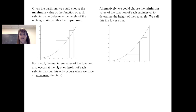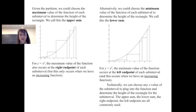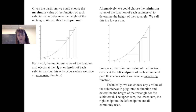Alternatively, we could choose the minimum value of the function on each subinterval to determine the height of each rectangle — we call this the lower sum. For y equals x squared, that minimum occurs at the left endpoint of each subinterval, again because we have an increasing function. We can also choose any x value in any subinterval — for one subinterval we could choose the left endpoint, for another the right endpoint.